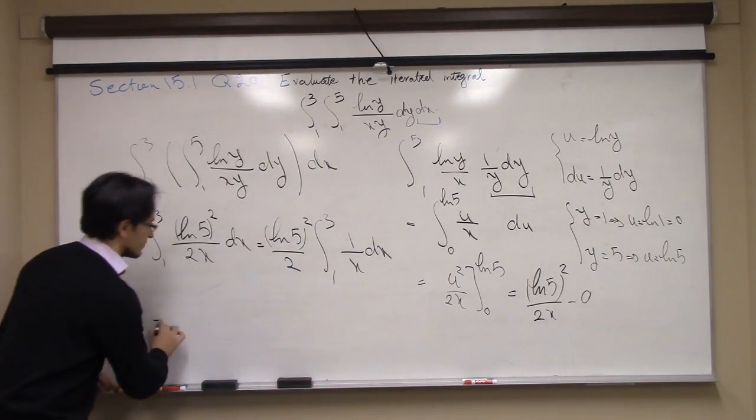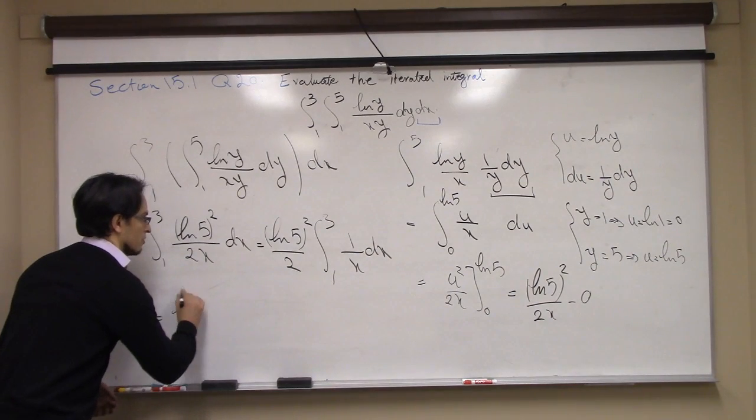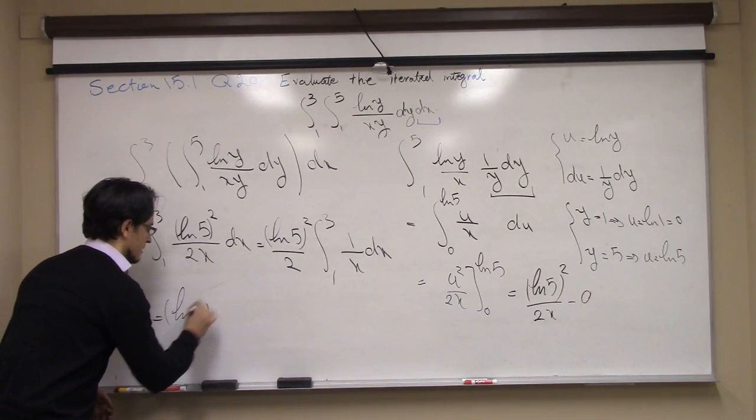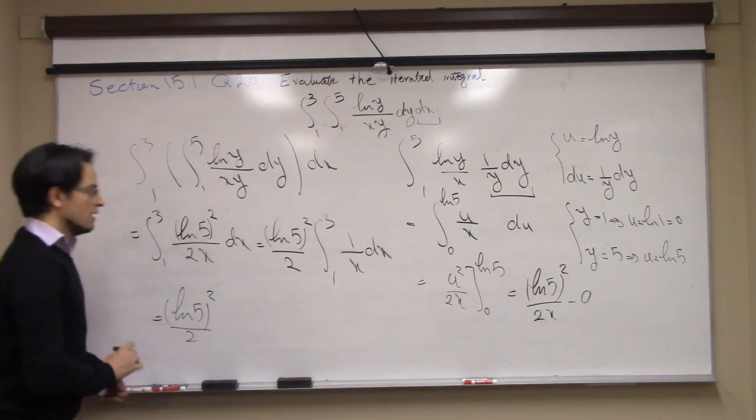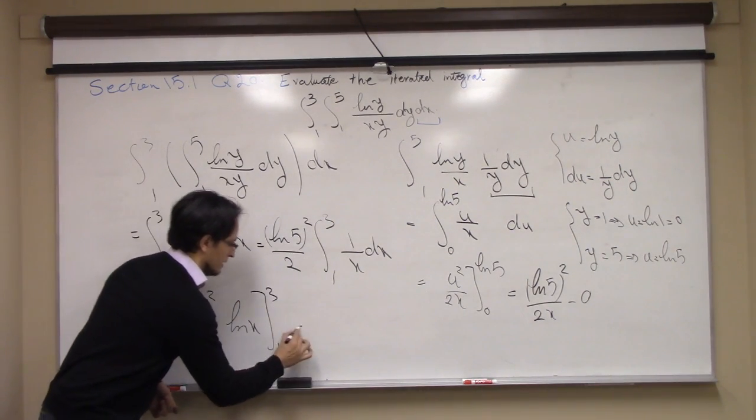The antiderivative of 1 over x is ln x, so I write down the constants. This is ln x, going from 1 to 3.